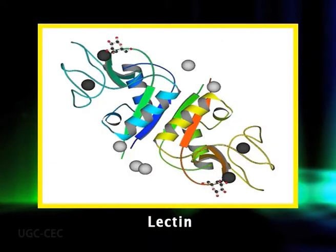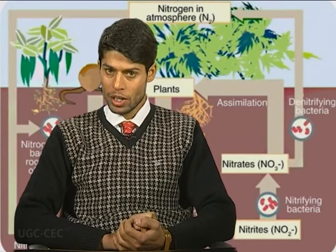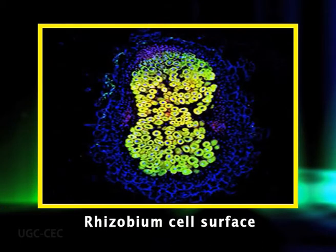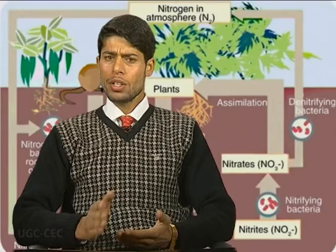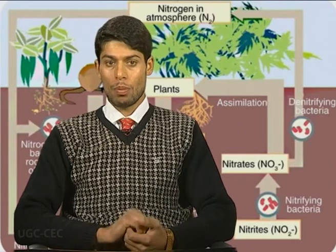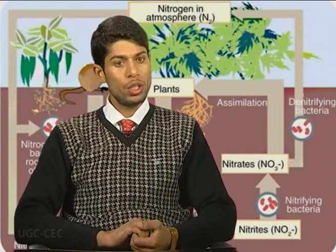Lectins are small non-enzymatic proteins synthesized by the host and have the particular ability to recognize and bind to specific carbohydrates. In addition, auricardicin, a calcium-binding protein, is thought to be located on the surface of the rhizobium cell and appears to be involved in the recognition mechanism.